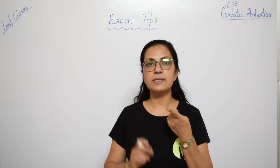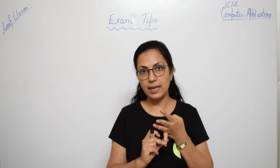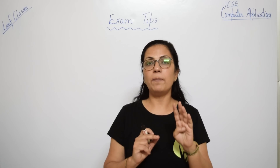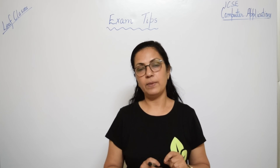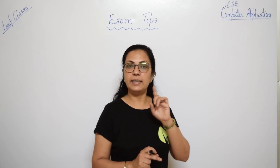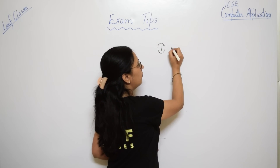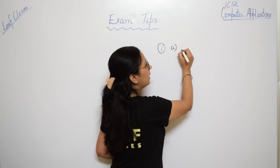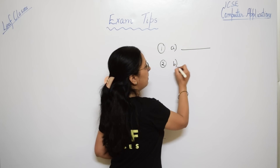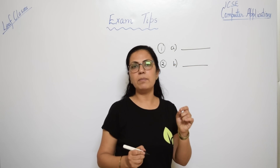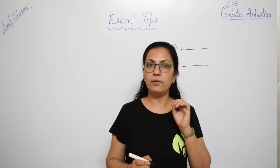In your syllabus you have four topics: encapsulation, library classes, arrays, and string handling in Java. From these four topics, two or three marks each question will be there in Section A. Section A will be of ten marks. For each question in Section A, write both the correct option number and its correct answer properly.